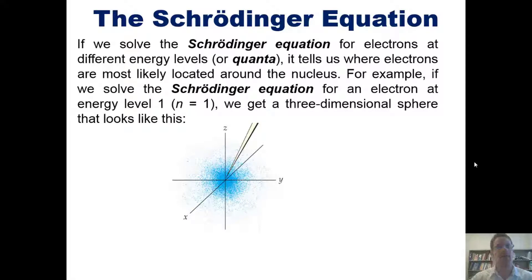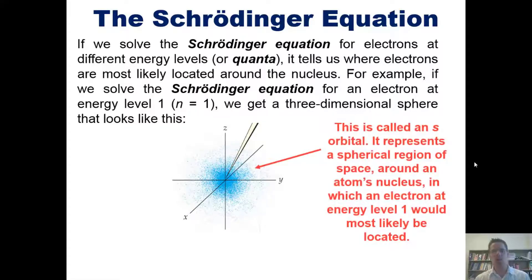That sphere happens to be called an s orbital. Once again, it represents the spherical location of space around the atom's nucleus in which an electron at energy level one, or n = 1, would most likely be found.